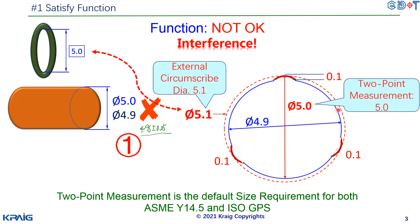First, we have a blue part — this blue part is a perfect circle with a 4.9 diameter. Now imagine there are three convex deformations of 0.1 outward from the blue circle. Because there are three convex protrusions externally, the external circumscribed diameter becomes 5.1. The next measurement — from point to point — is 5.0.